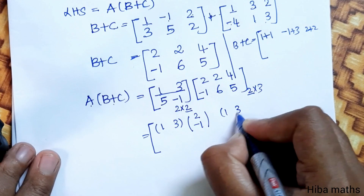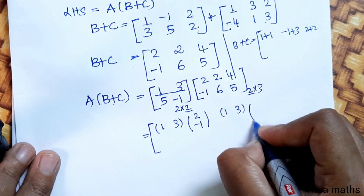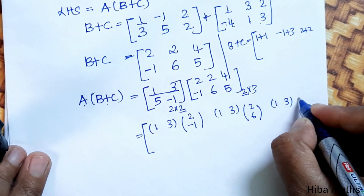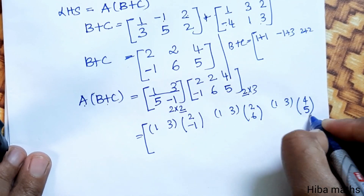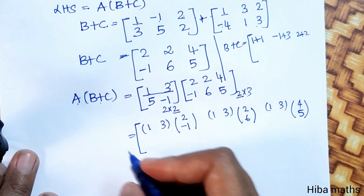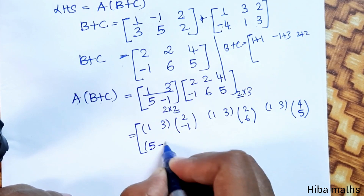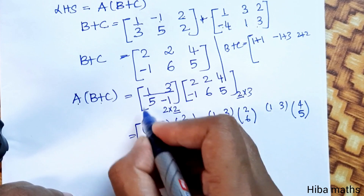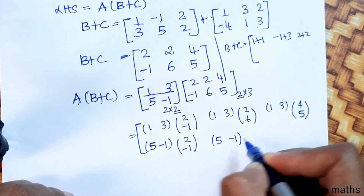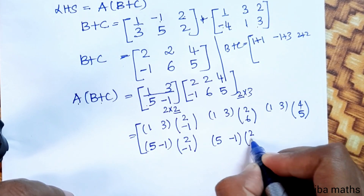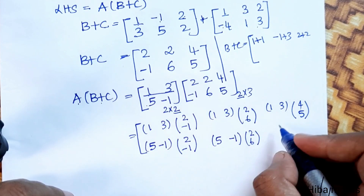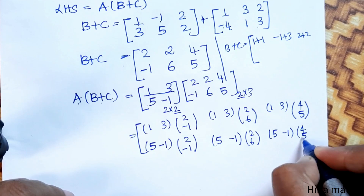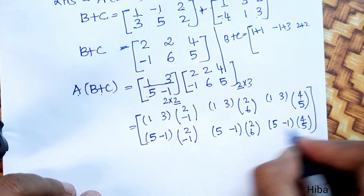First row, second column of (B+C) is [2,6]. First row, third column is [4,5]. Second row of A is [5,-1], first column of (B+C) is [2,-1]. Second row, second column is [2,6]. Second row, third column of (B+C) is [4,5].